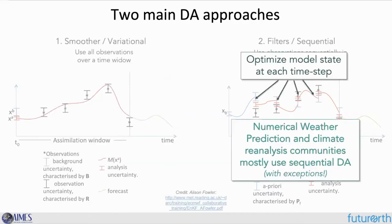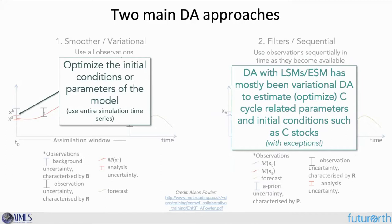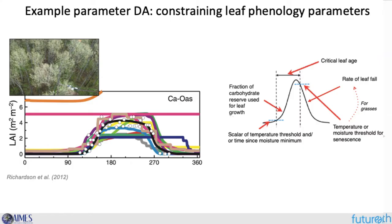Land surface models are used by different communities, and these data assimilation approaches serve different purposes. For numerical weather prediction communities and climate reanalysis communities, the sequential data assimilation approach is mostly used. But when using land surface models within Earth system models for long-term climate change projections, most of the work done to date has been to optimize the parameters of the model, specifically as they relate to carbon cycle processes and carbon initial stocks.